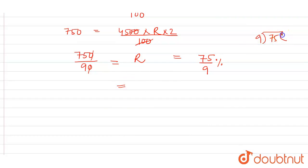So 9 into 8 is 72, 3 remainder. So this is equal to 8 3/9 percent. Or we can say it is also divisible, right? The common factor is 3. So 3 into 1 is 3, 3 into 3 is 9. So 8 1/3 percent is the rate of interest.